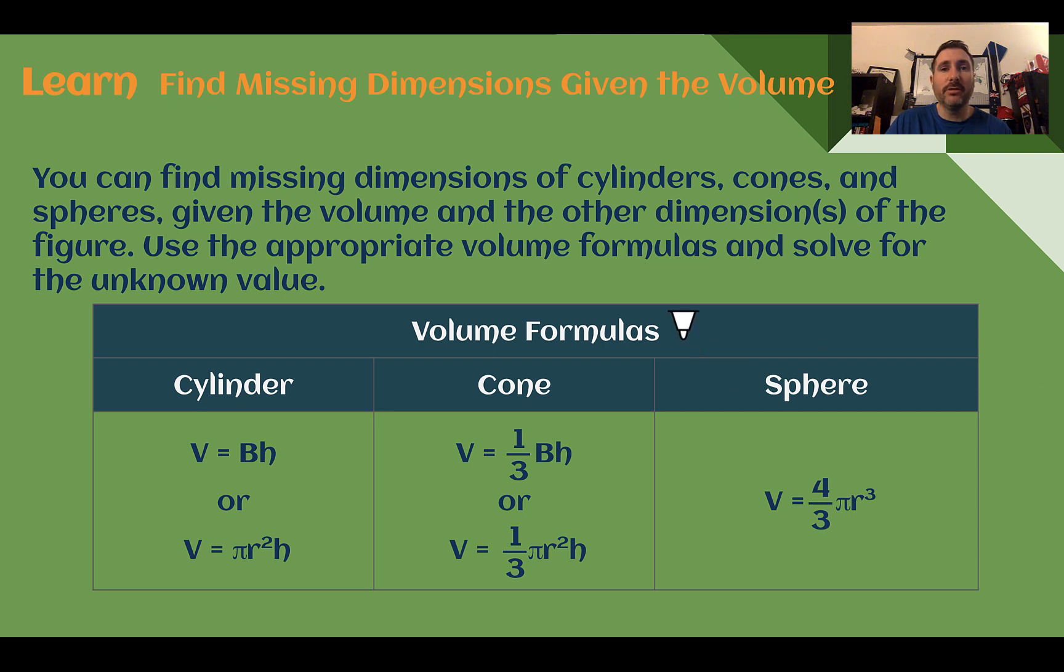So as a reminder, our volume formulas for a cylinder, we have volume equals pi times the radius squared times the height. For a cone, it's pretty much the same thing, but one-third of that, or divided by three.